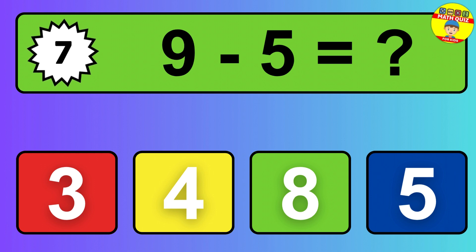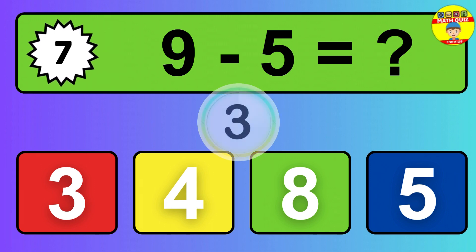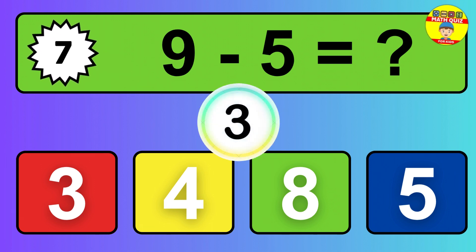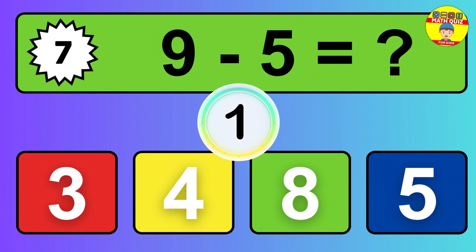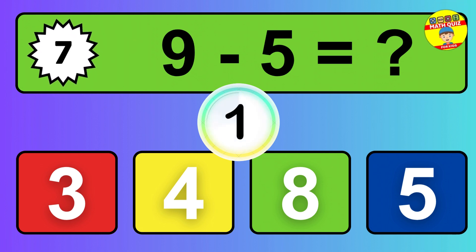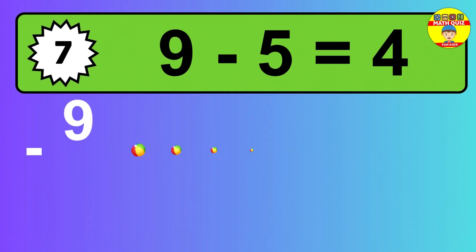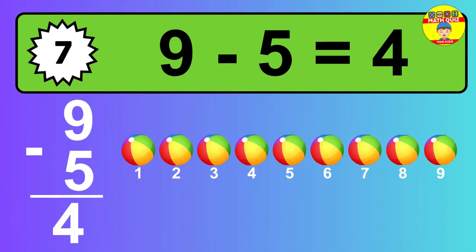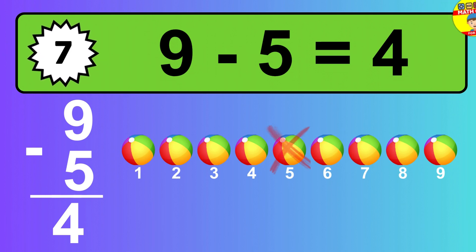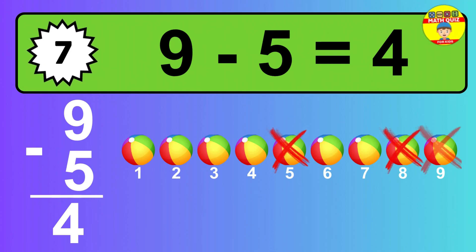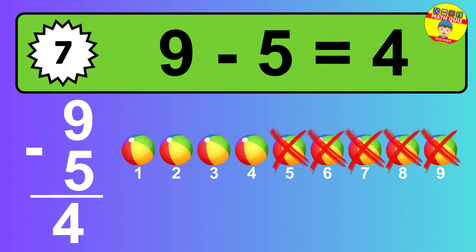Question 7. 9 minus 5 equals what? The answer is 9 minus 5 is 4. Let's count it. 1, 2, 3, 4.